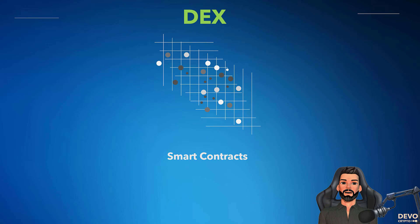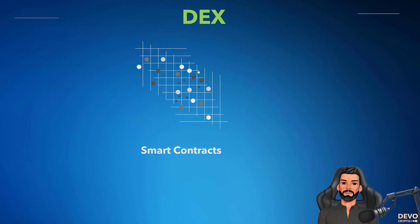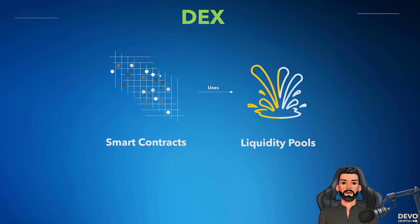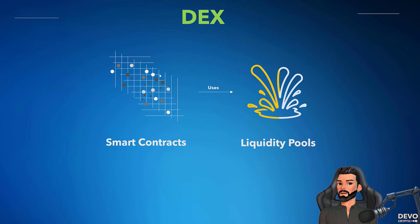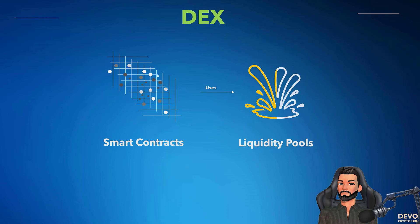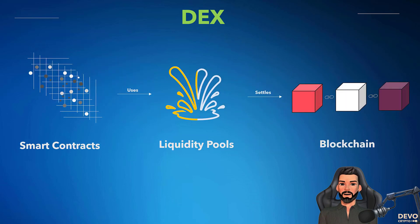Decentralized exchanges are a set of smart contracts. They establish the price of various cryptocurrencies algorithmically and use liquidity pools, in which investors lock funds in exchange for interest-like rewards, to facilitate trades. DEX transactions are settled directly on the blockchain.